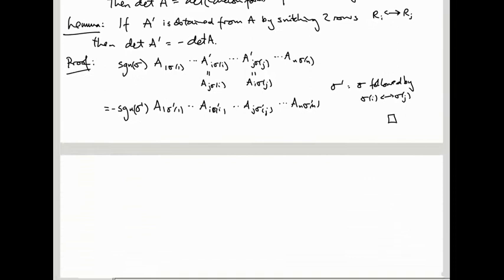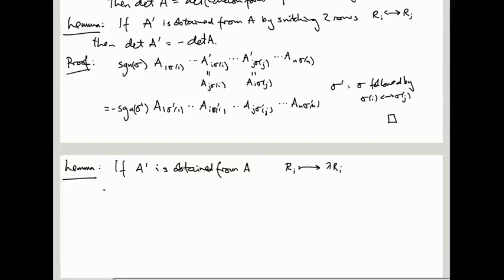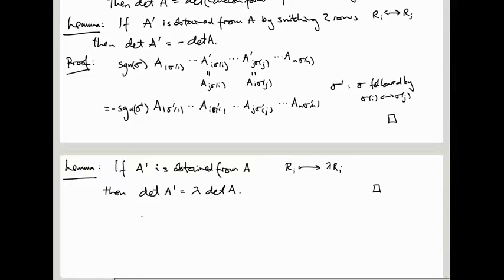Finally, if A' is obtained from A by the operation ri → λ·ri, then det(A') = λ·det(A). You can prove this using index notation in the same way — it's actually even easier, because writing out the definition the factor of λ just pulls out to the front. So type-two row operations scale the determinant by whatever λ you multiply by. In the next video we'll use these lemmas to calculate the determinant in a bunch of examples.